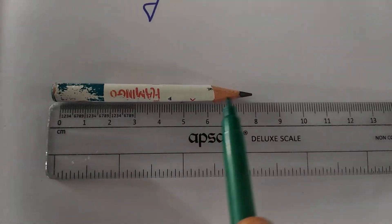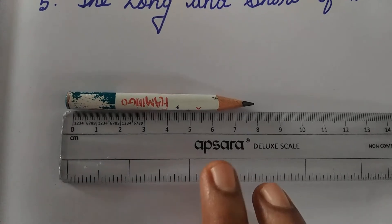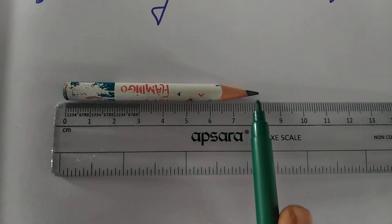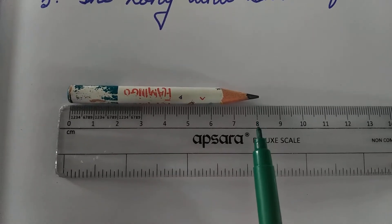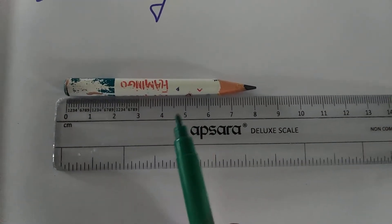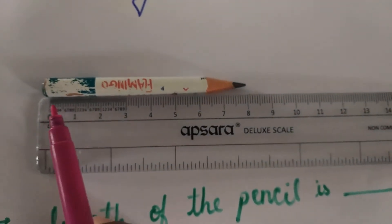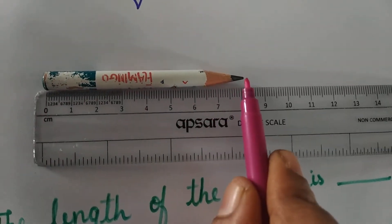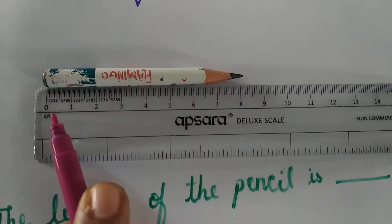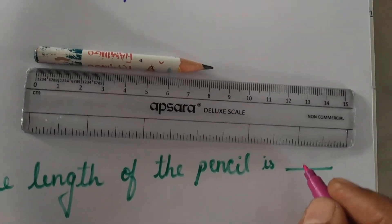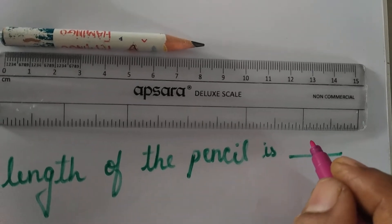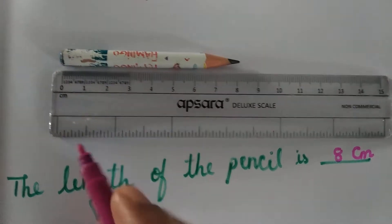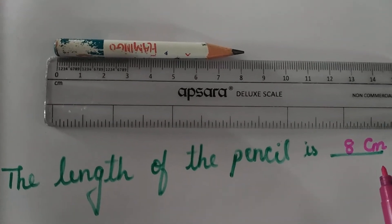From 0, see the tip of the pencil. The tip of the pencil is nearly 8. So what is the length of this pencil, Kanna? 8 cm. From 0 — you want to measure. I have kept the pencil from 0 and the tip of the pencil ends at the number 8. So the length of the pencil is 8 cm. You want to write it here: 8 cm. Centimetre we write in short form as cm.